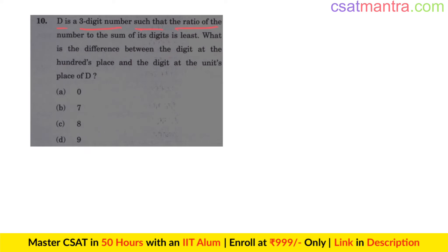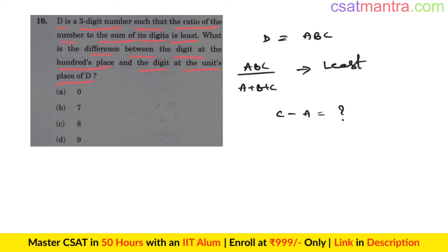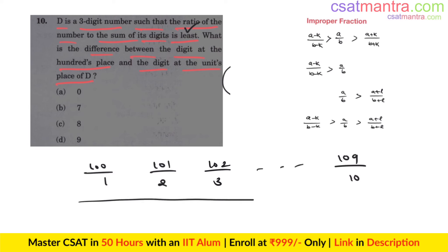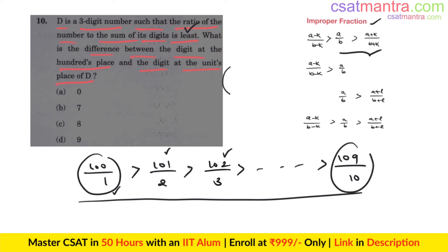D is a three-digit number such that the ratio of the number to the sum of its digits is least. What is the difference between the digit at the hundreds place and the digit at the units place? Writing D as ABC, we need ABC/(A+B+C) to be minimized. Starting from 100: 100/1, 101/2, 102/3 ... 109/10. Using the rule that a/b > (a+k)/(b+k), 100/1 is the least from 100 to 109. Similarly 110/2 is least from 110 to 119, and so the pattern gives 109/10 as least in the 100s range.